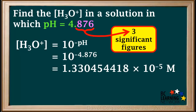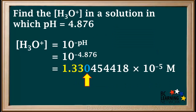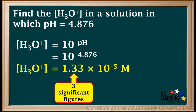Remember, in a pH, only digits after the decimal point are significant figures. This number is a molar concentration, not a pH, so we use the normal rules for significant figures and round to three significant figures. We include the first three digits starting from the left; the 1 to the left of the decimal is significant in a normal concentration value. The digit following the last significant figure is less than 5, so we do not round up. The final answer is the concentration of hydronium is 1.33 times 10 to the negative 5 molar. The exponent part of the number is not counted as significant figures.